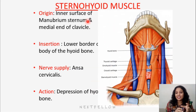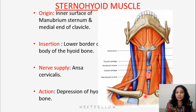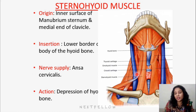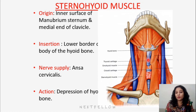Looking at sternohyoid in more detail: it originates from the inner surface of the sternum and also from the clavicle, and inserts into the body of the hyoid bone. Its nerve supply is from the ansa cervicalis, which will be explained shortly. Its action is to depress the hyoid bone — it pulls the hyoid bone down.